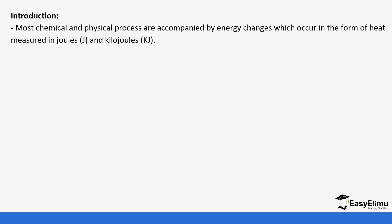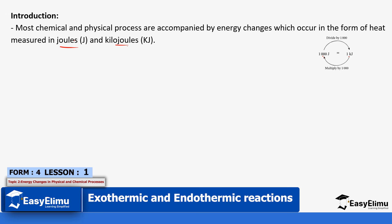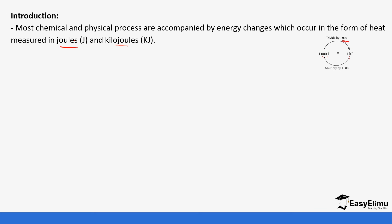Most chemical and physical processes are usually accompanied by energy changes, which usually occur in the form of heat and are usually measured in joules and kilojoules. In our calculations we will have units of joules and kilojoules, so it is important to remember the conversion: 1,000 joules makes 1 kilojoule, so to convert joules to kilojoules you divide by 1,000, and to convert kilojoules to joules you multiply by 1,000.